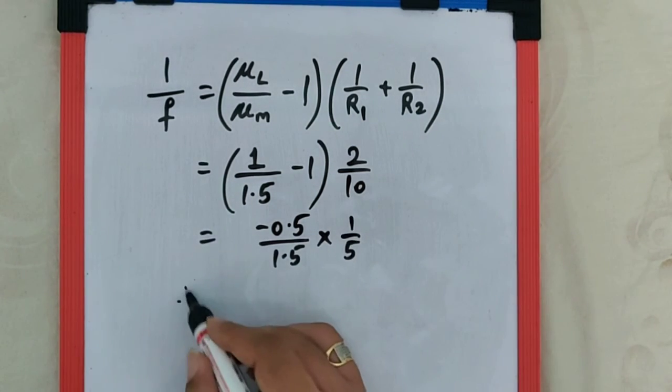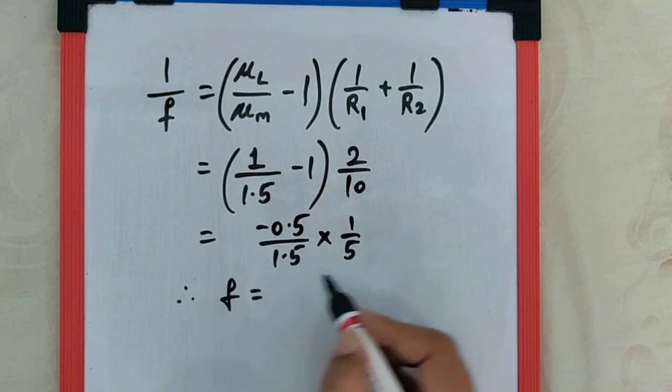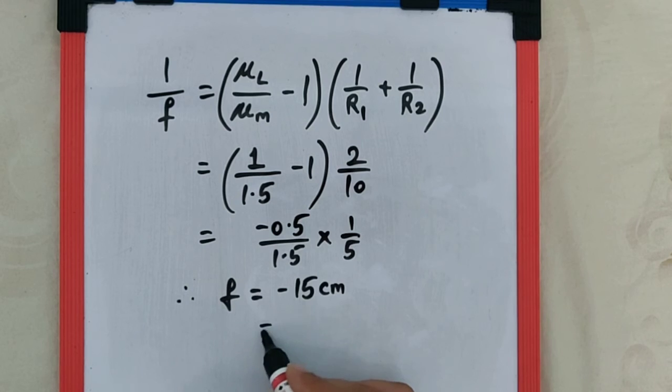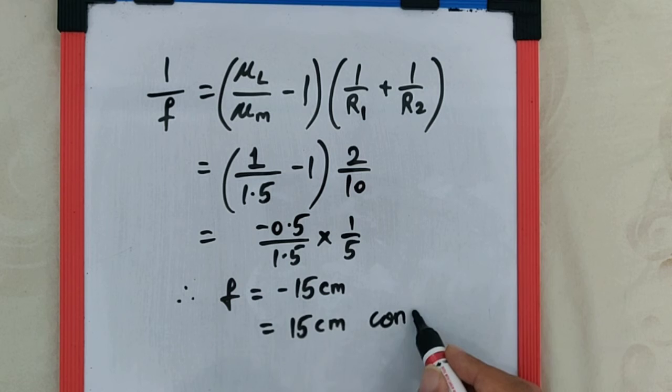Therefore, the focal length is -15 centimeters, which means it is a 15 centimeter concave lens, because the focal length is negative for concave lenses.